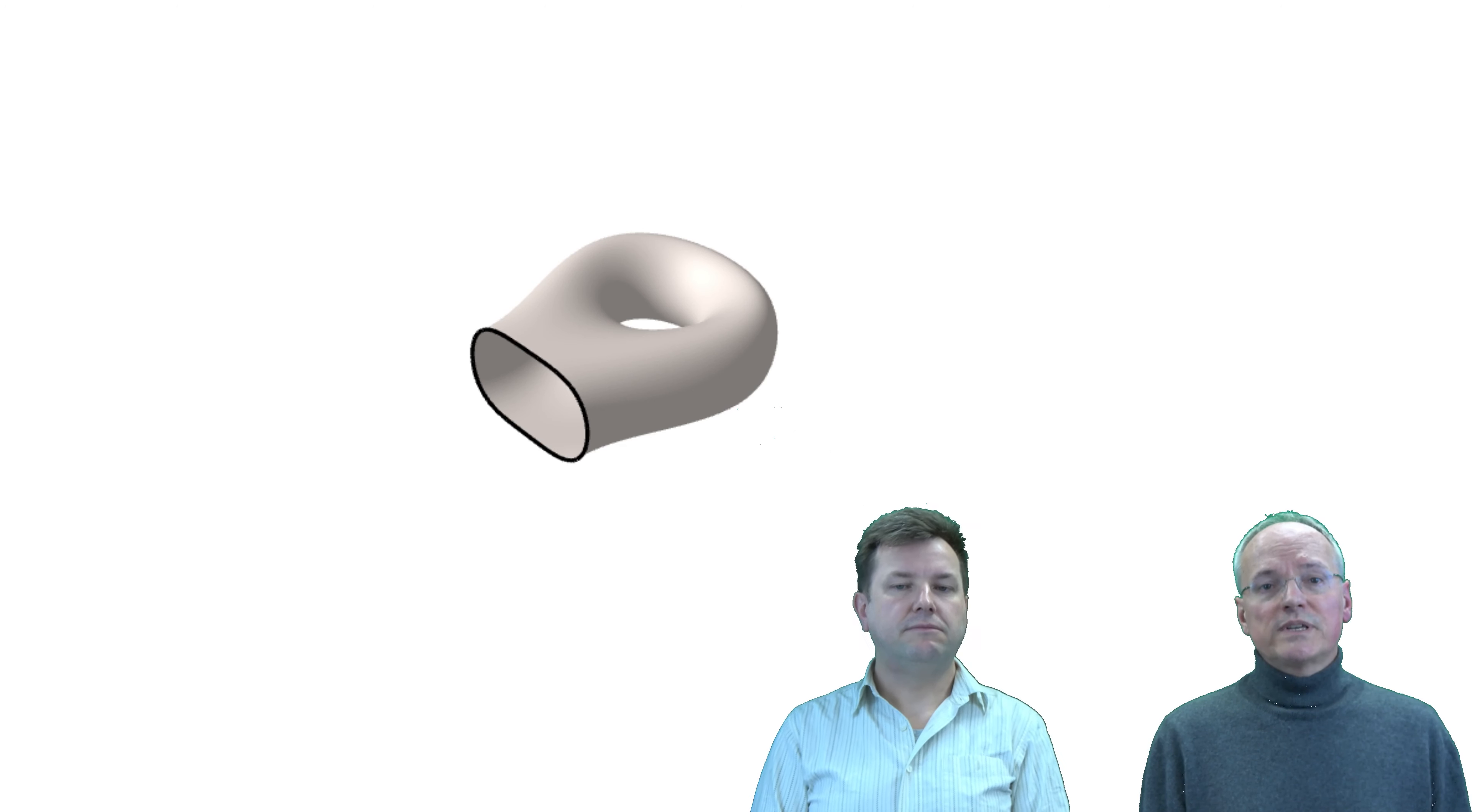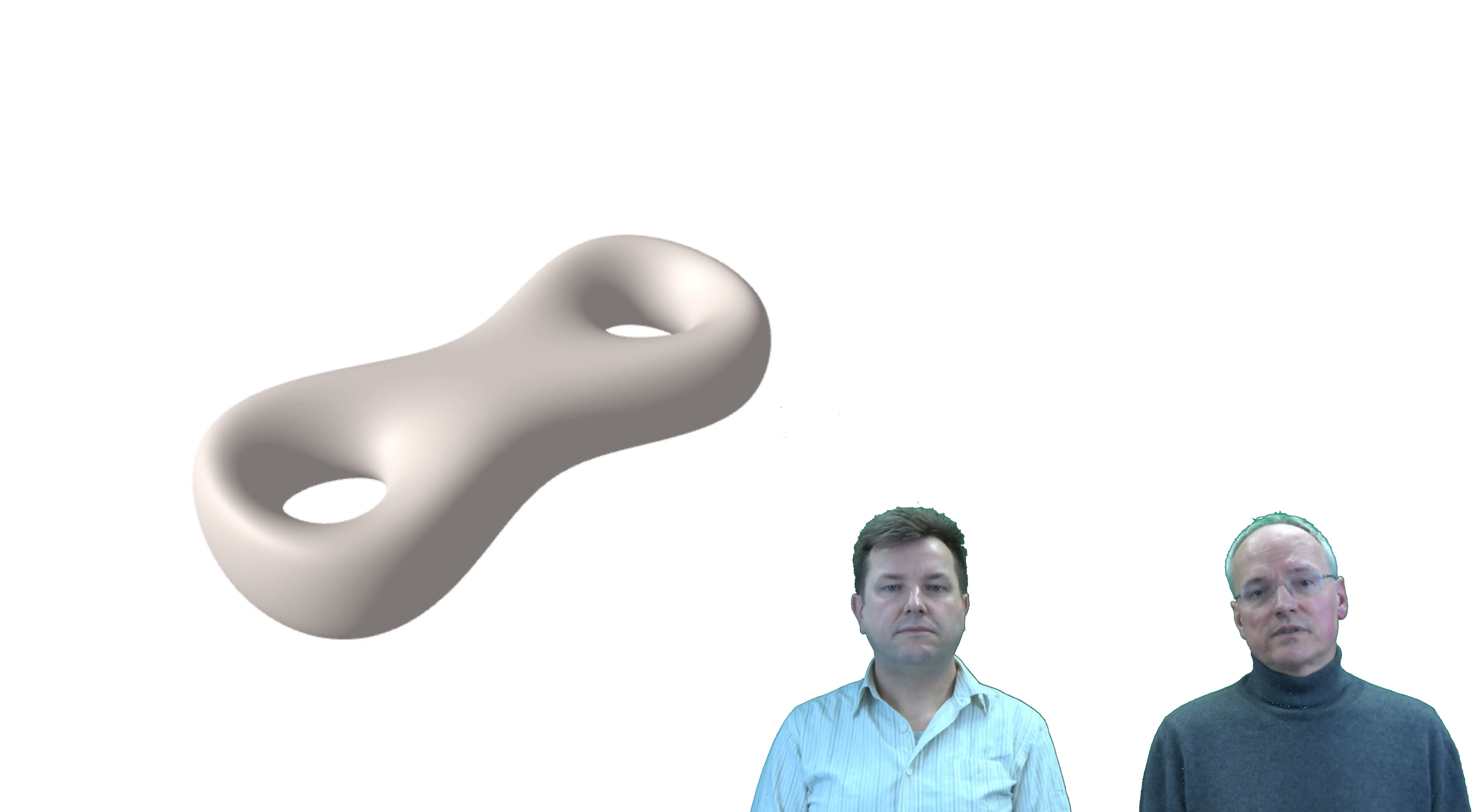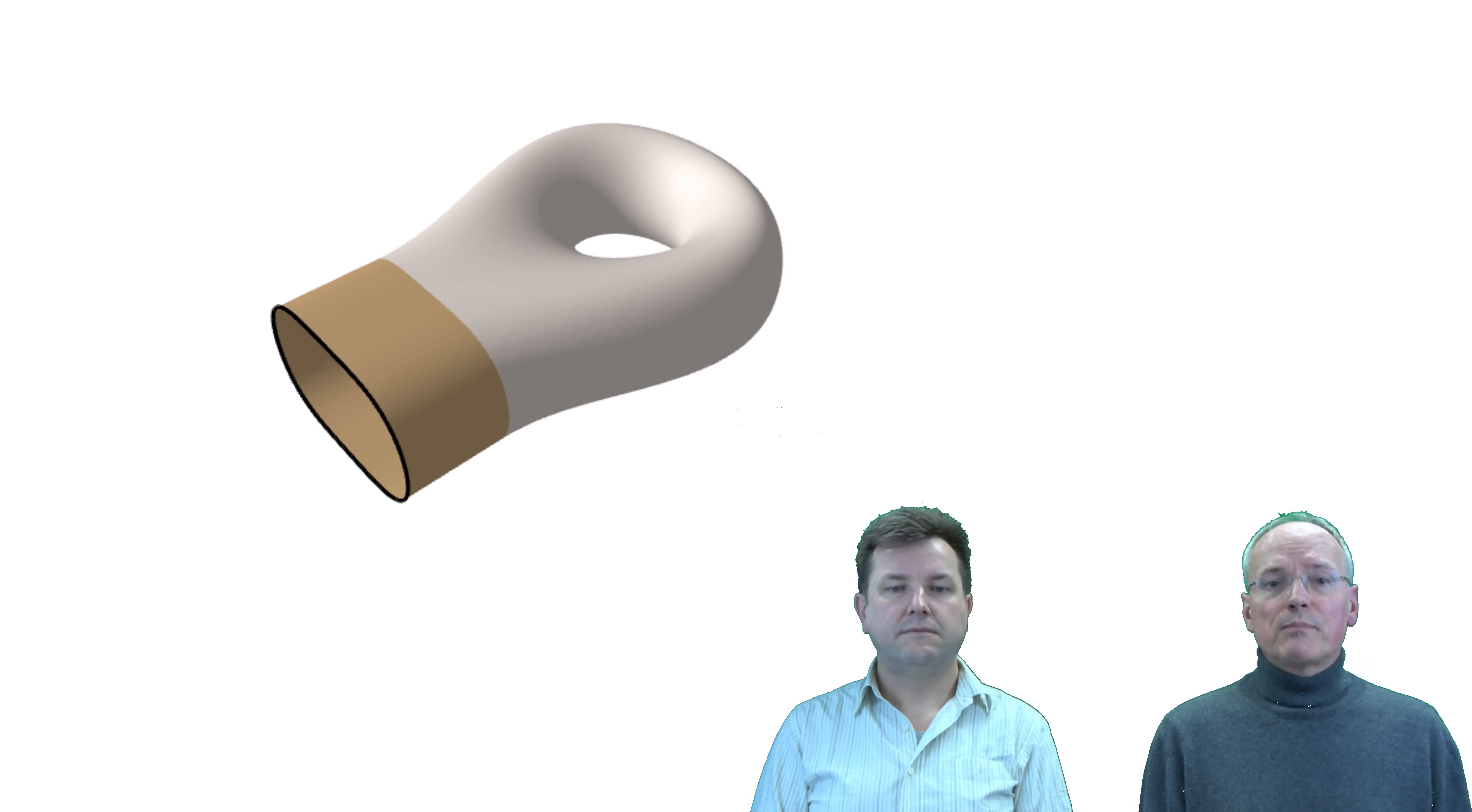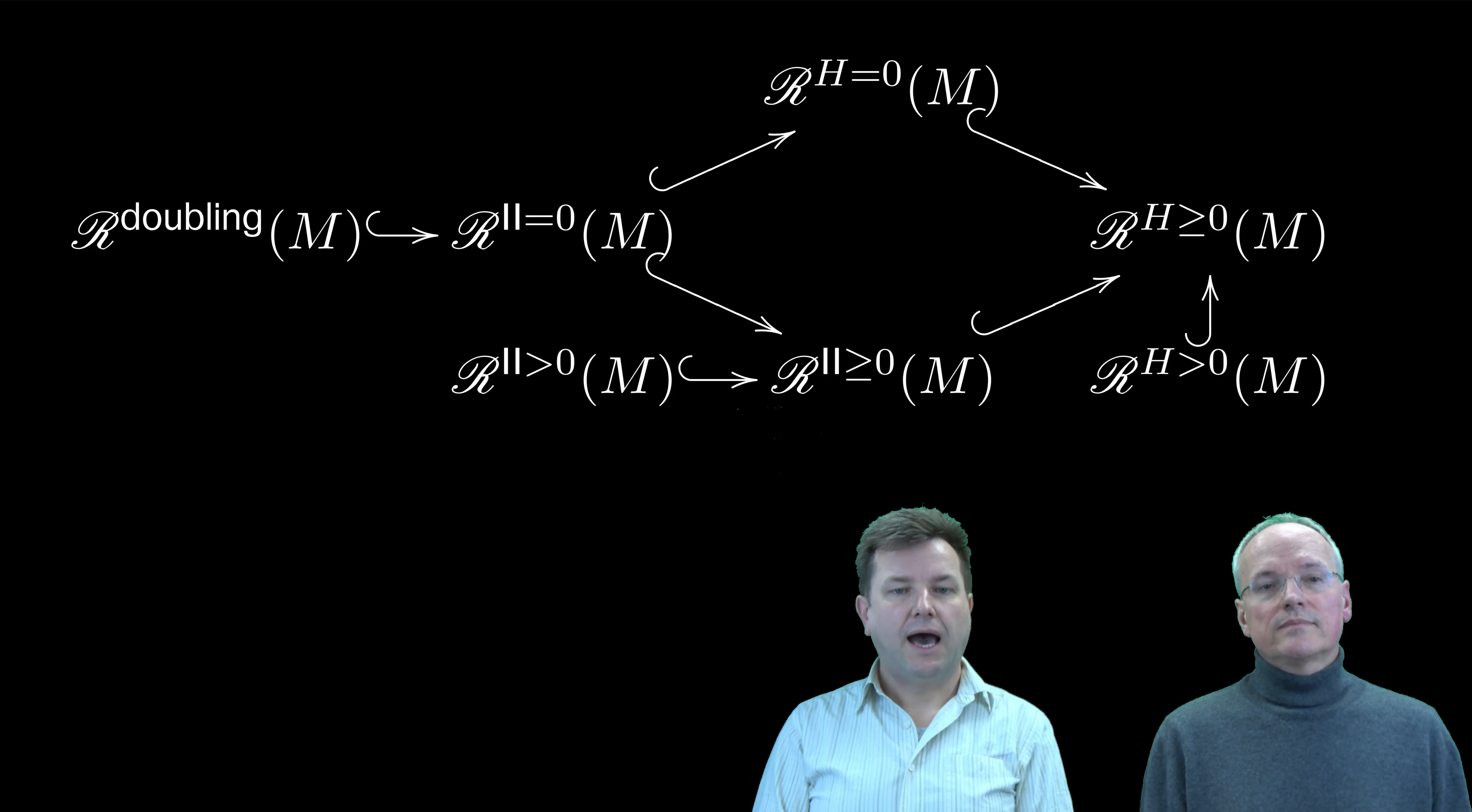We can also look for metrics which are doubling in the sense that the induced metric on the double of the manifold is smooth across the boundary. Another popular boundary condition even demands that the metric is of product form near the boundary.